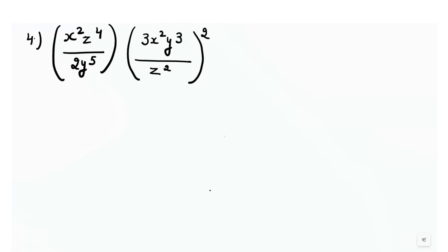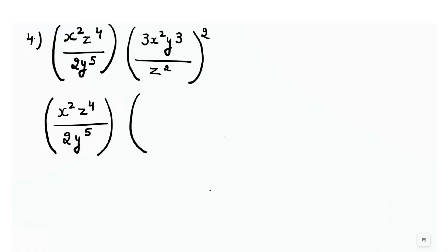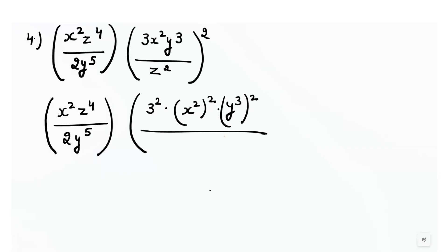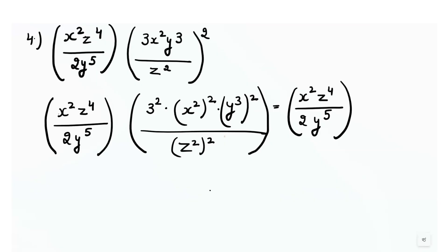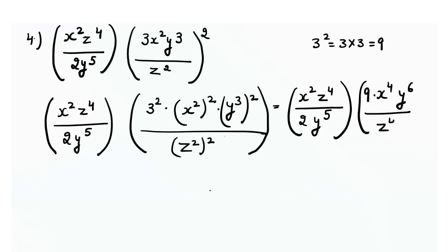In this question we use the same rule as the previous one. We open the second bracket. The first bracket has no outside power, so we write it as 2y raised to power 5. For the second bracket, we distribute the power to all terms: 3 raised to power 2, times x raised to power 2, times y raised to power 3, all raised to power 2, over z squared raised to power 2. We then write x squared z raised to power 4 divided by 2y raised to power 5. 3 raised to power 2 is 9; x raised to power 2 times 2 is x raised to power 4; y raised to power 3 times 2 is y raised to power 6; z raised to power 2 times 2 is z raised to power 4.